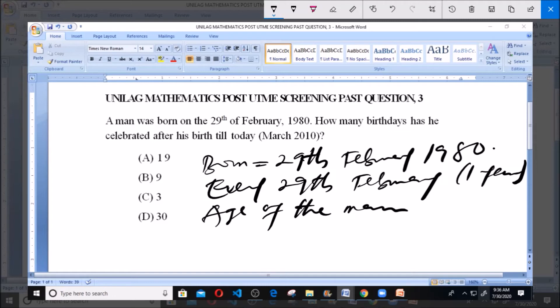To find the age of the man, you know he was born in 1980 and the present year is 2010. What you do is simply subtract to know the number of birthdays he has celebrated.